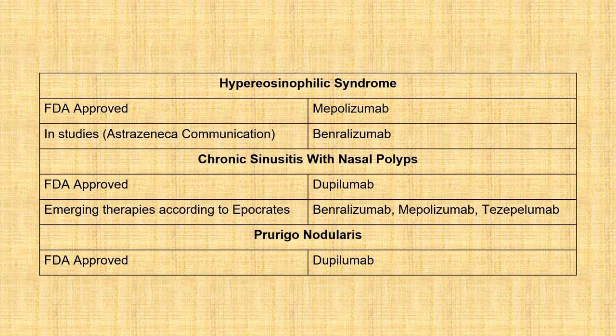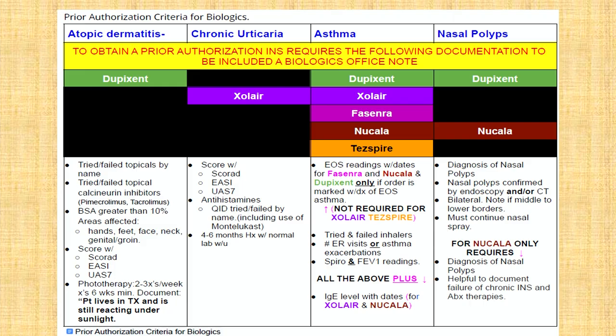For chronic sinusitis with nasal polyps, FDA-approved therapy is dupilumab. According to UpToDate, emerging therapies include benralizumab, mepolizumab, and tezepelumab, though this may be out of date. Most importantly, for prurigo nodularis — a condition that's really difficult to treat — the FDA has recently approved dupilumab. I might mention that I've had luck with ketotifen in one biopsy-proven case of prurigo nodularis.